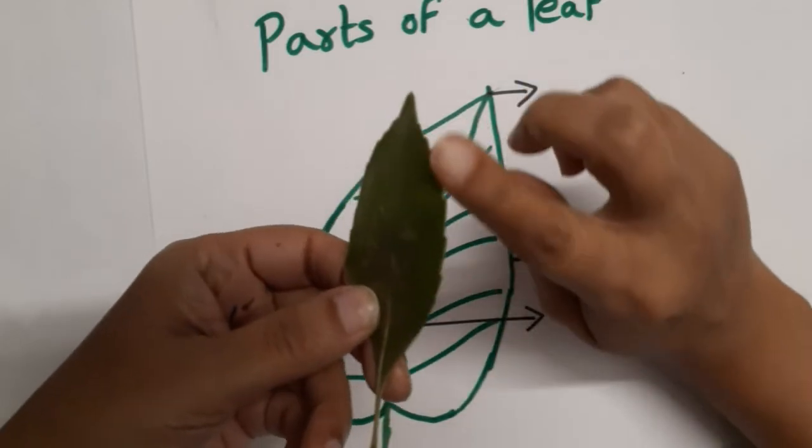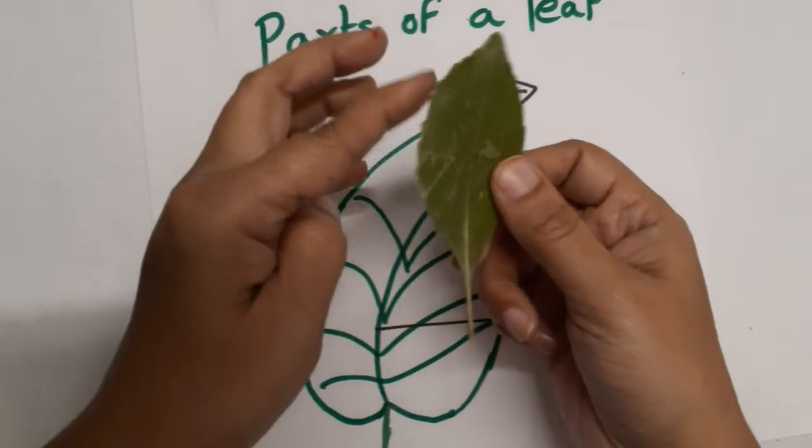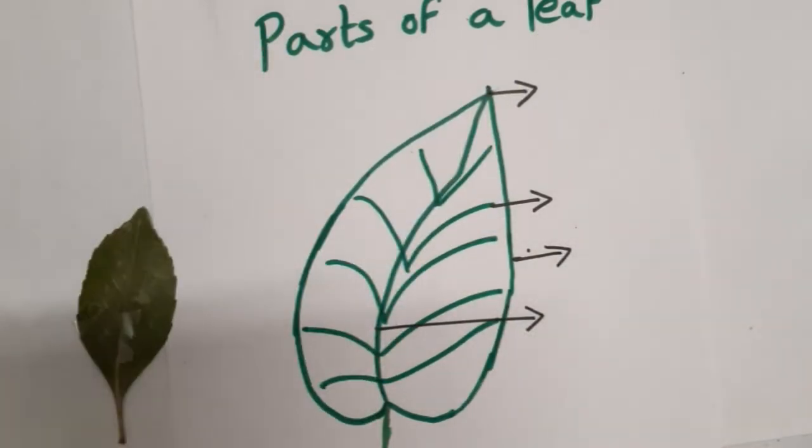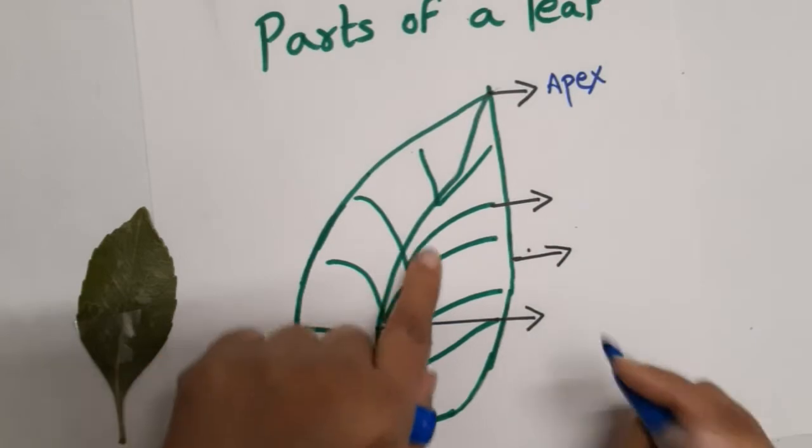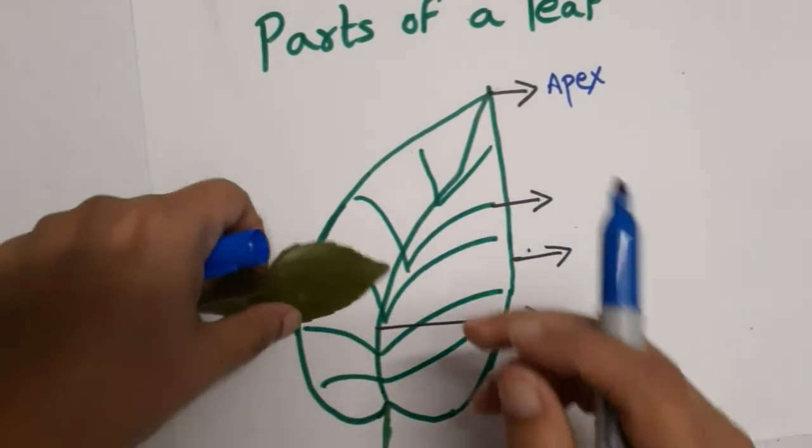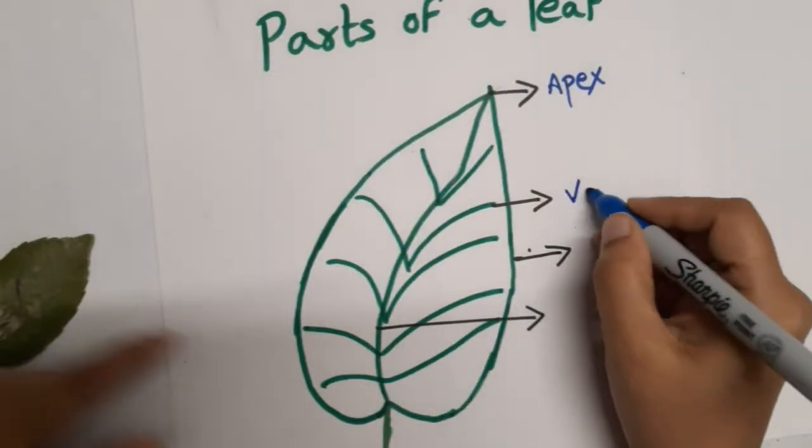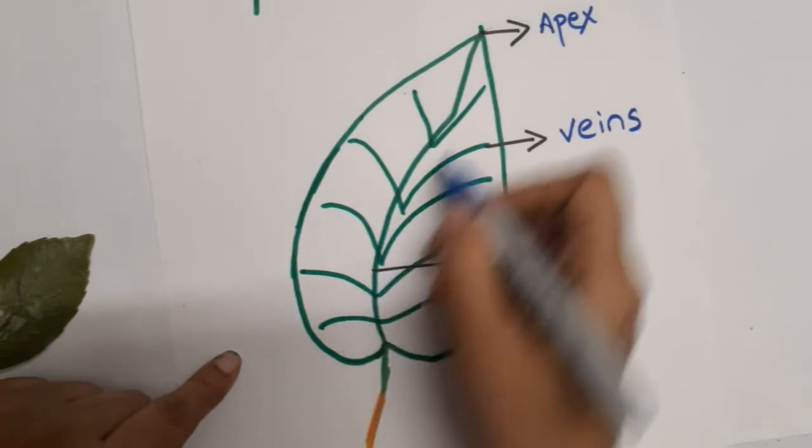The edge is called the leaf blade. So let's review the basic things that we have to teach the kids. This is the apex, these are the veins as we can see here, and this is the mid-rib.